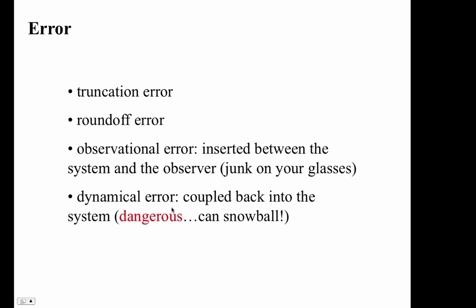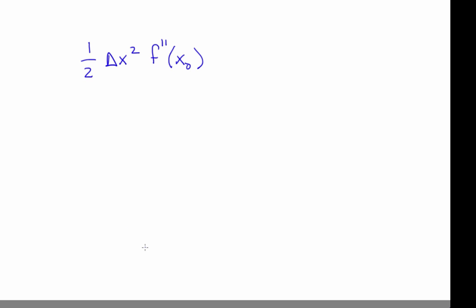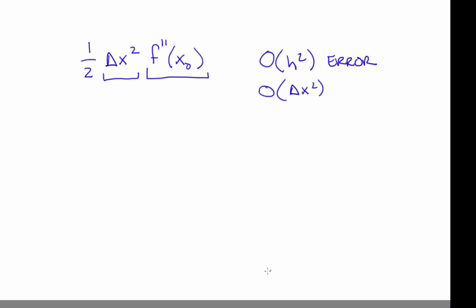Now let's look more closely at that error term derived for the forward Euler method. The form of this term suggests that the error forward Euler makes will depend on the curvature of the landscape. This is called the local truncation error — for a single step of the method. That's not surprising because forward Euler does a linear extrapolation along the tangent vector f prime. This term also suggests that the error is proportional to the square of the length of the step you take. We call this an order h squared error, or an order delta x squared error.